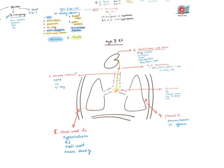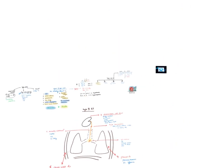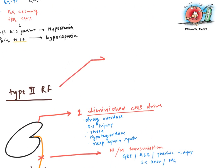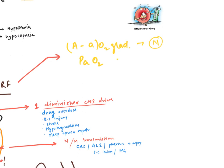These are the causes of type 2 respiratory failure. Type 2 respiratory failure is due to alveolar hypoventilation — there is inability to eliminate CO2 efficiently by the lungs, therefore the partial pressure of arterial CO2 increases, resulting in hypercapnia.